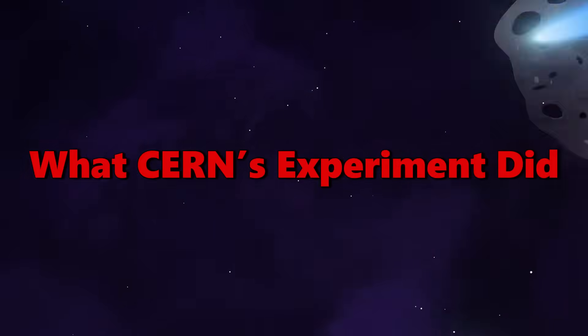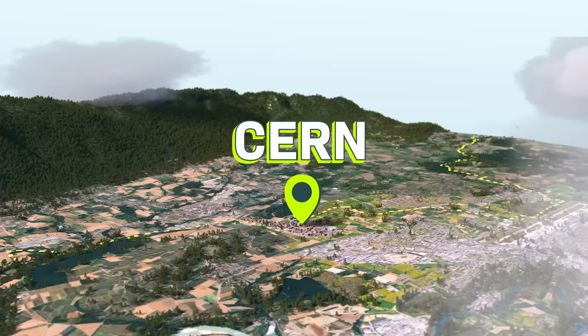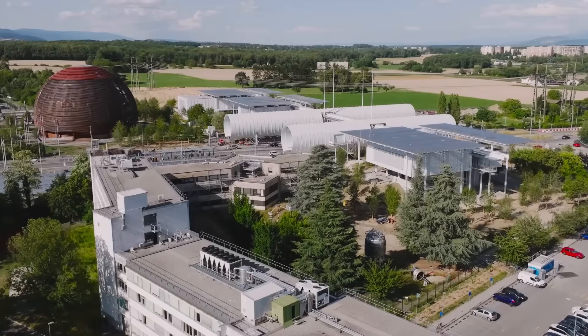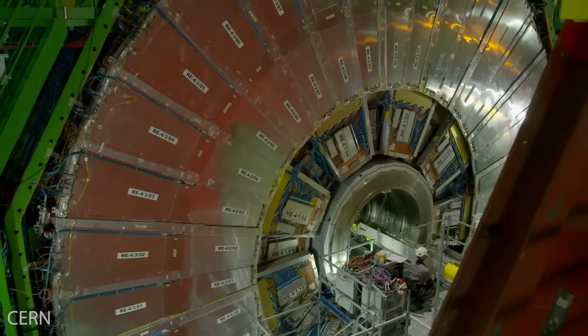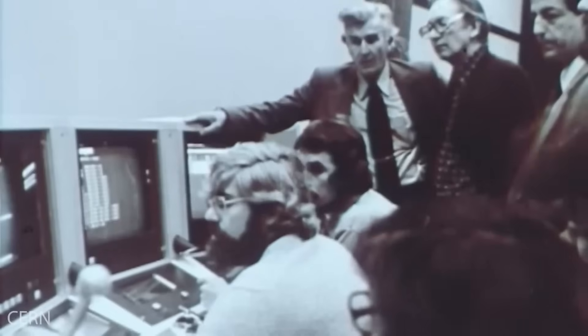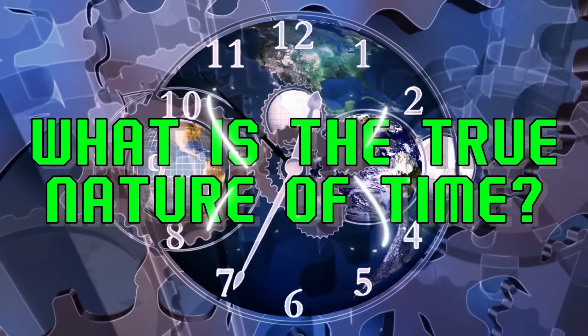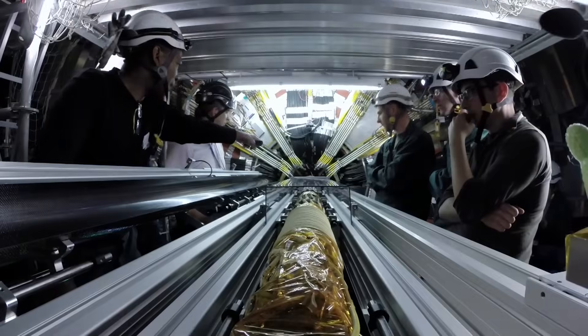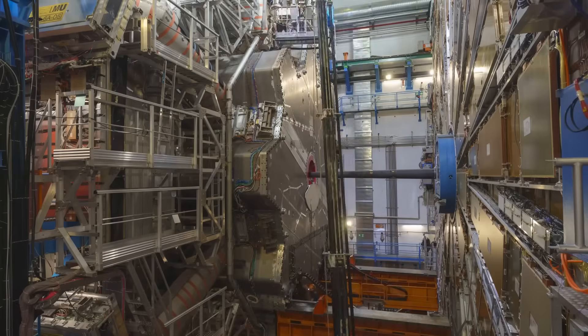What CERN's experiment did. At CERN, scientists have long pushed the boundaries of physics by creating environments that mimic the most extreme conditions in the universe. Recently, they turned their attention to a question that has puzzled physicists for decades: What is the true nature of time? To tackle this, CERN researchers developed an advanced quantum neural network, a hybrid system that combines the principles of quantum computing with the adaptive learning capabilities of artificial intelligence.